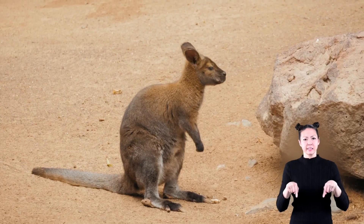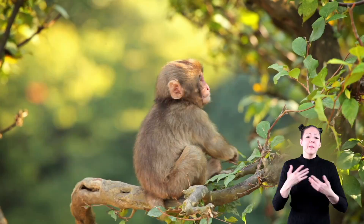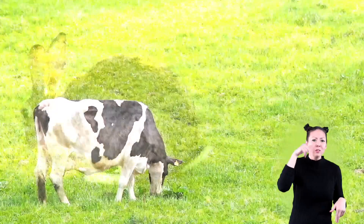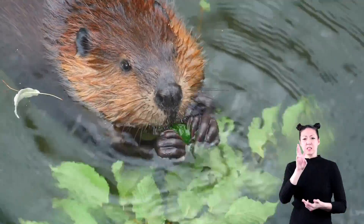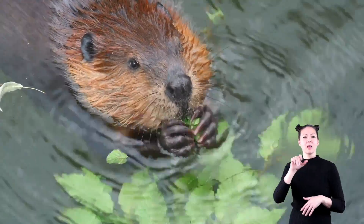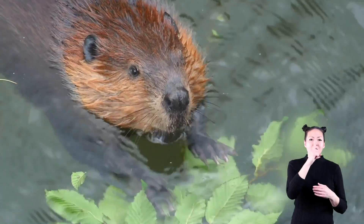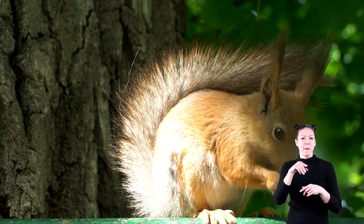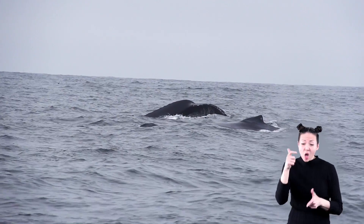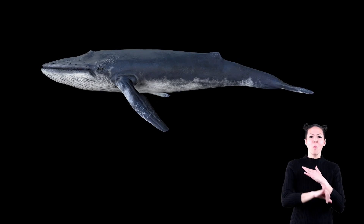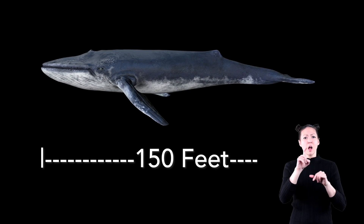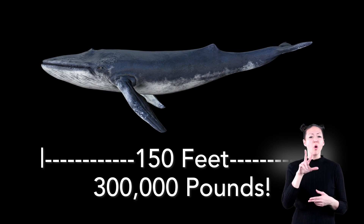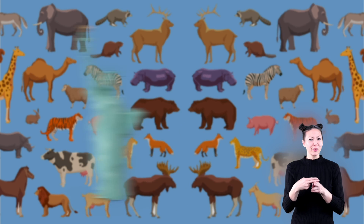Mammals that live on land have four limbs — either two arms and two legs, like kangaroos and monkeys, or just four legs, like horses, cows, and rabbits. There are about 6,500 species of mammals. Rodents such as beavers, mice, and squirrels make up almost half of the mammals on Earth. The largest mammal in the world is the blue whale, which can be 150 feet long and weigh 150 tons, or 300,000 pounds.